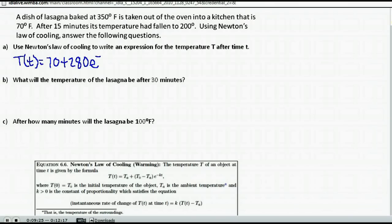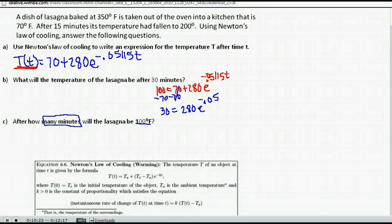Look over Part C. It says, after how many minutes will the lasagna be 100 degrees Fahrenheit? So this time, we have to find t. How many minutes is what they want to know. And we know the ending temperature is 100. So we know this T(t) is 100. We're solving to find t. So we have 100 is equal to 70 plus 280 e to the negative 0.05115 t. And we're going to solve from there. So again, we have to isolate the exponential part. So we're going to subtract 70 from both sides. So we'll get 30 equals 280 e to the negative 0.05115 t.